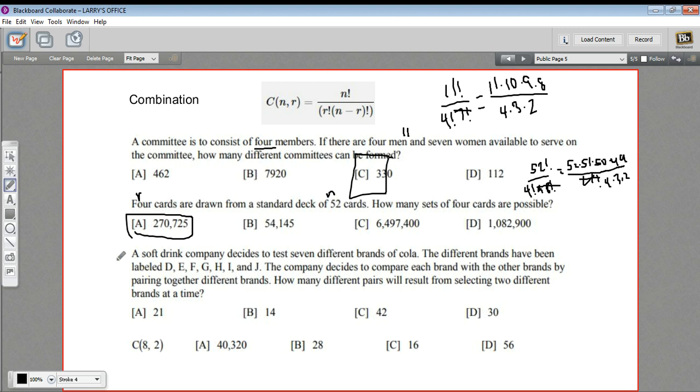Let's see if we can figure out this next one. It says a soft drink company decides to test seven different brands of cola. The different brands have been labeled D E F G H I and J. The company decides to compare each brand with the other brands by pairing together different brands. How many different pairs will result from selecting two different brands at a time? So we're choosing two things out of a group of seven. So n equals seven here, and r equals two.